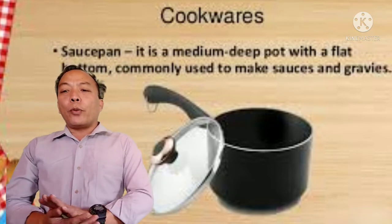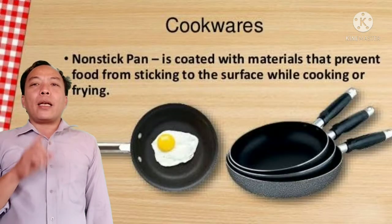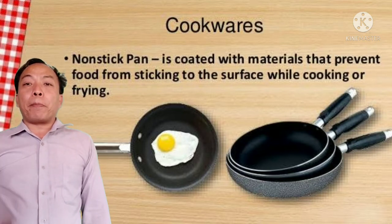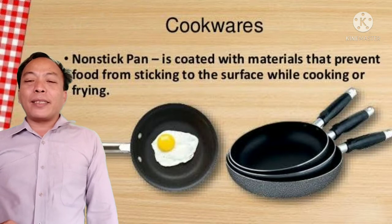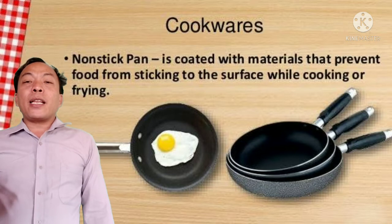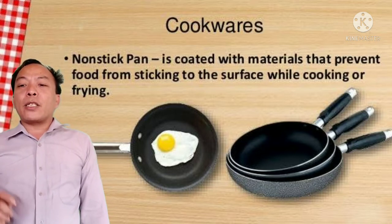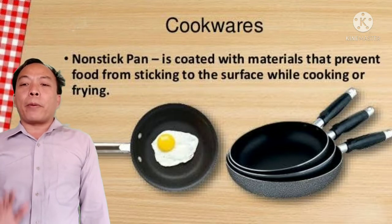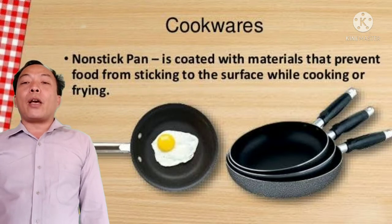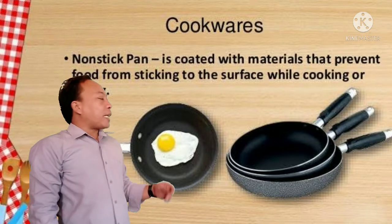We also have the saucepan — a medium-deep pot with a flat bottom, commonly used for making sauces and gravies. We also have the non-stick pan, which is best for preparing sunny-side-up eggs and scrambled eggs because food will not stick to the pan. It is coated with materials that prevent food from sticking to the surface while cooking or frying.